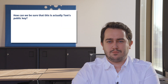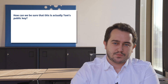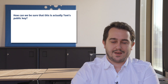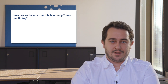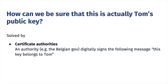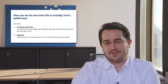However, now the question remains: how can everyone know that my public key actually belongs to me? Well, this problem is currently solved by registries and certificate authorities. Certificate authorities are actual authorities like governments or trusted organizations that digitally sign messages of the form 'this key belongs to this entity.' Registries are basically lists that say 'this key belongs to this entity' and 'that key belongs to that entity.'